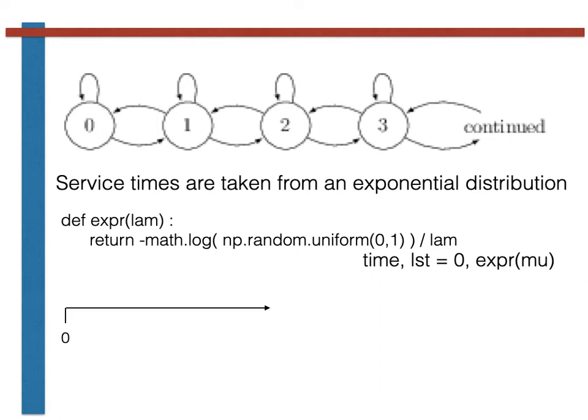The code shown here also sets a second variable called LST. This is the time that the first customer leaves service. As this customer arrives at t equals zero, LST is thus an exponential random variable with parameter mu as this is the distribution from which the service times are sampled.